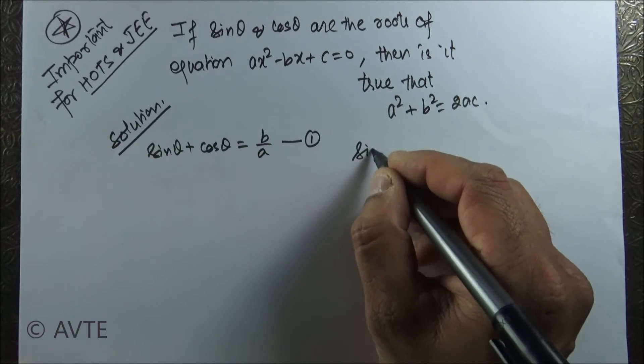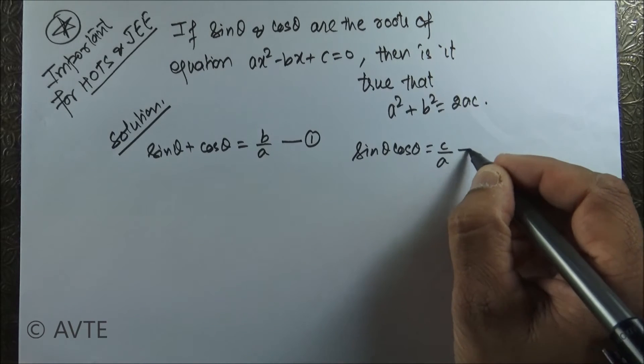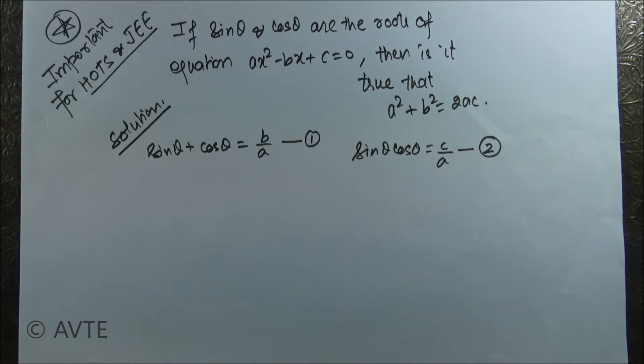Now what is the product? That is sine theta cos theta, and that is c by a, and we're taking that as equation number two.